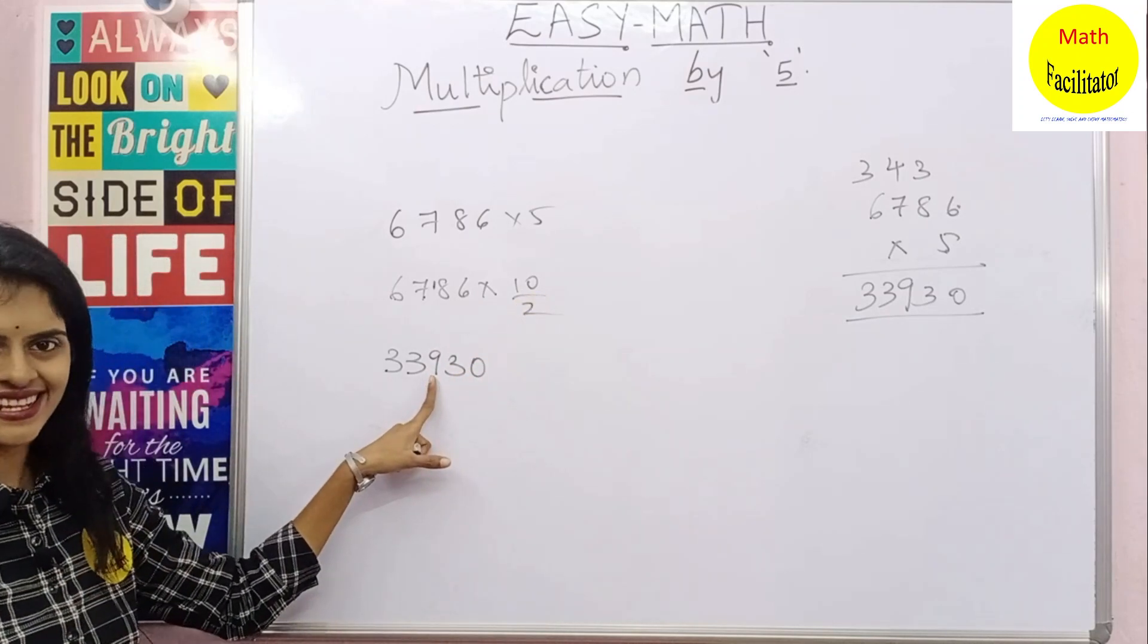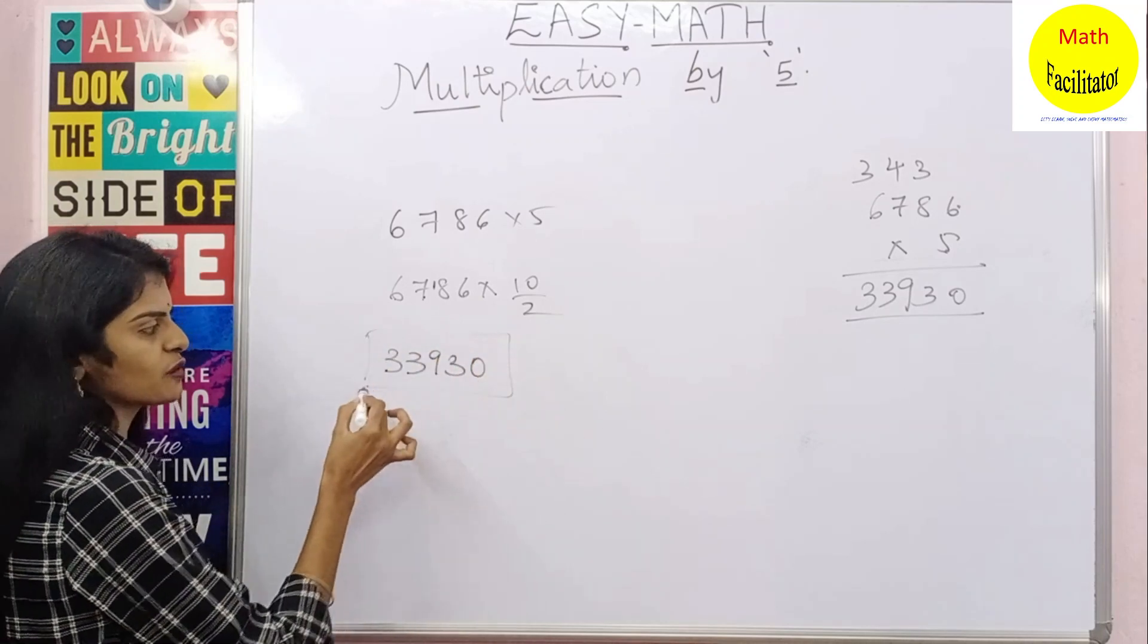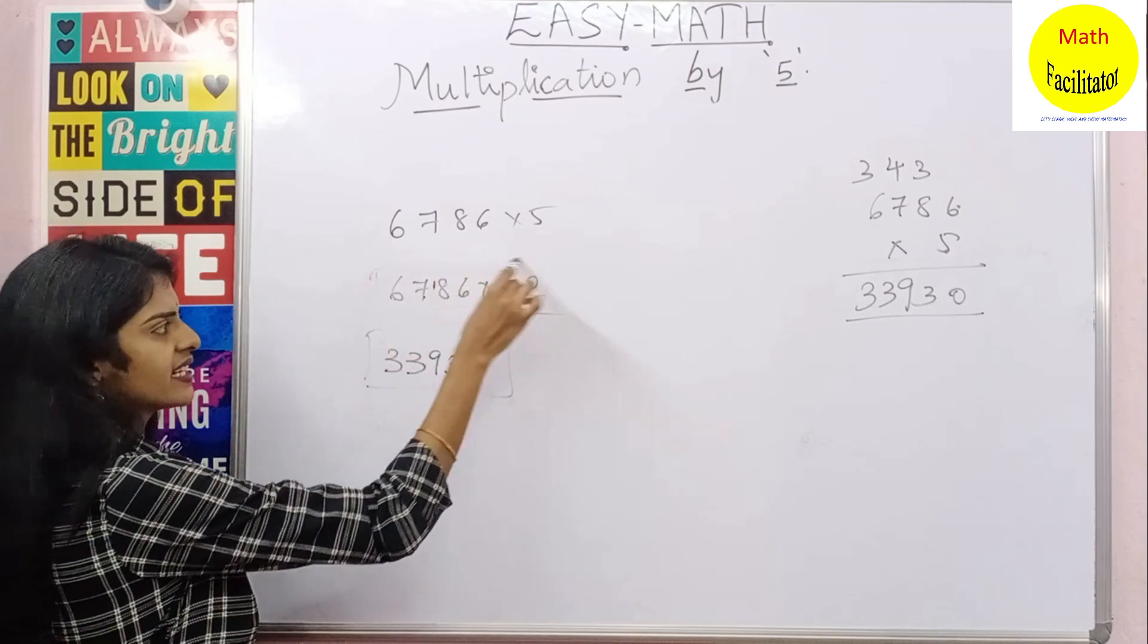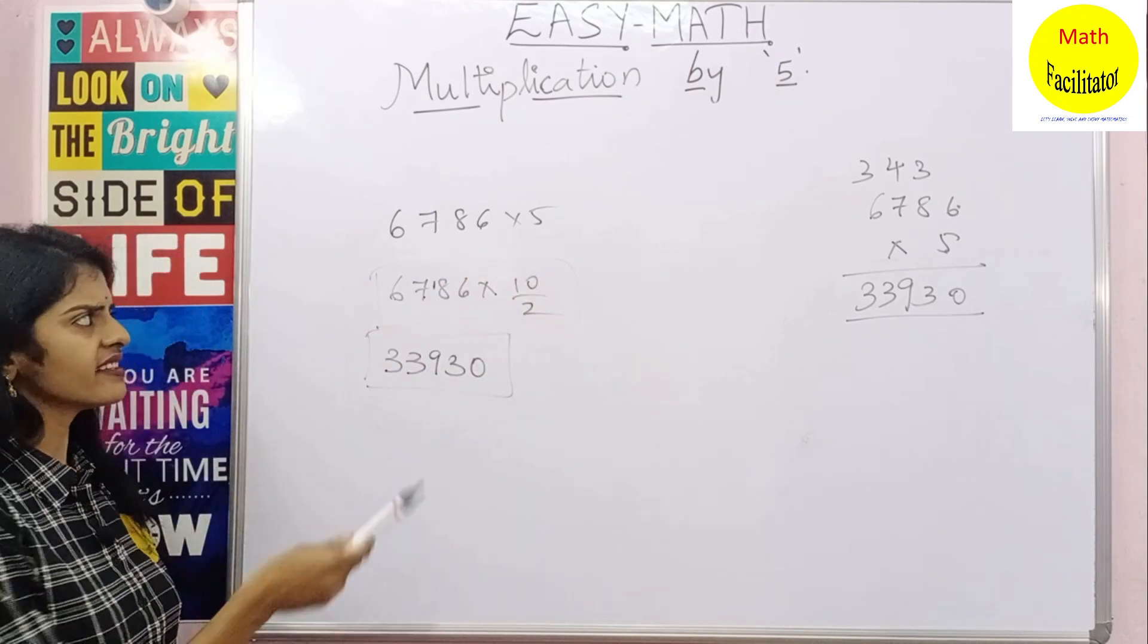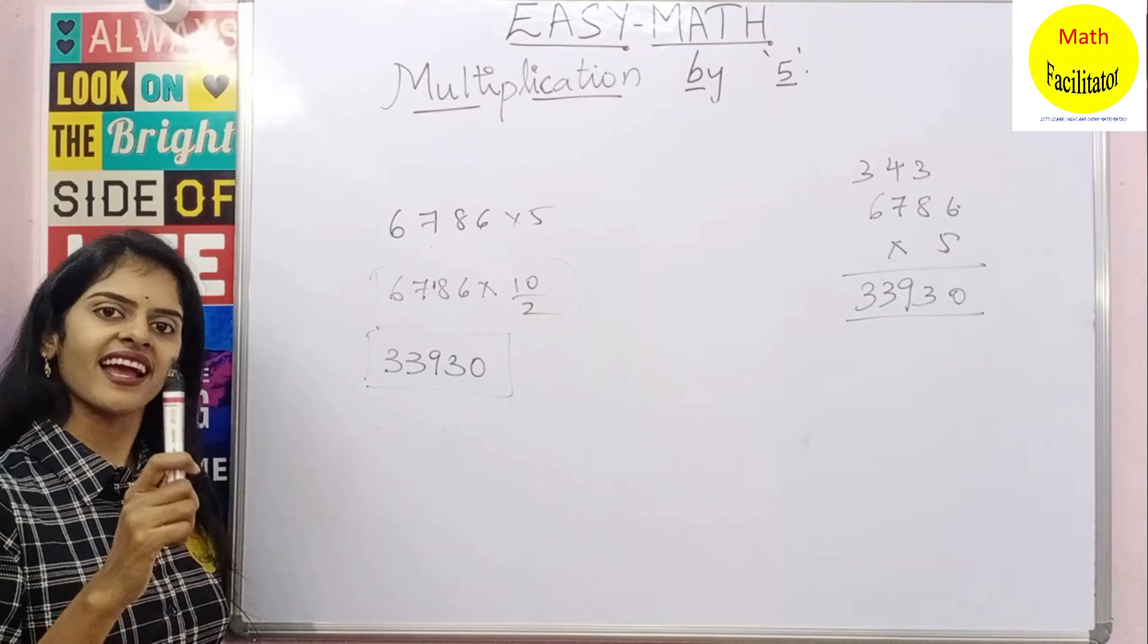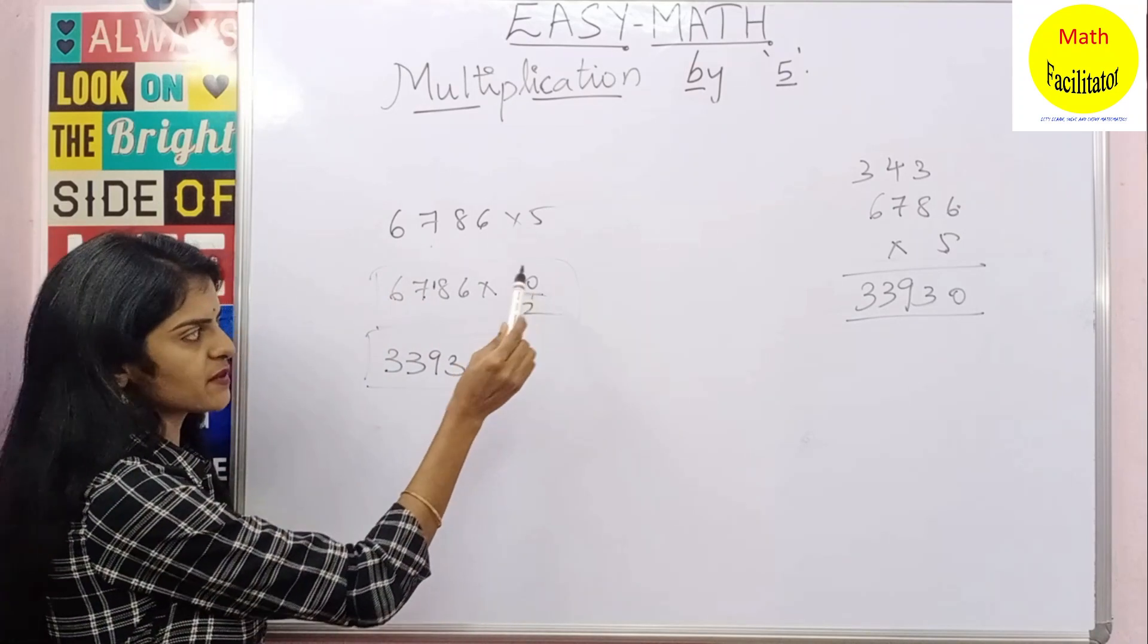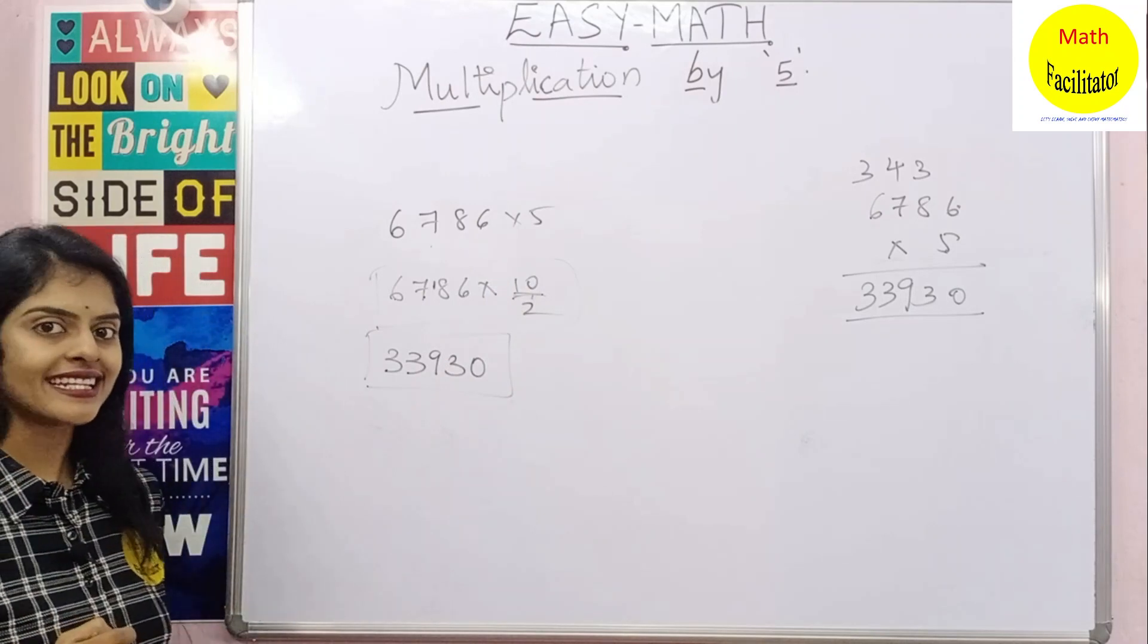You can also eliminate this step. You can directly divide this number by 2 and add a 0 at the end. And why are you adding a 0? Because you are multiplying it by 10. So this is the logic. Let us do it directly now.